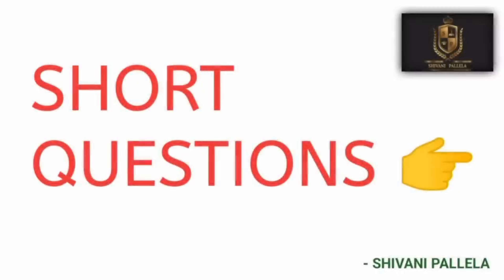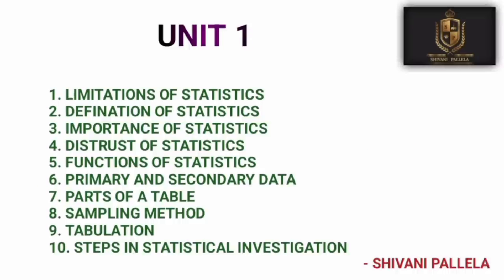Now we will discuss the short questions worth 20 marks total, unit wise. For unit one, there are about ten questions, but if you are perfect with the long questions, no need to learn all of them separately, as they are all covered there. The most important and expected questions are 'Distrust of Statistics' and 'Limitations of Statistics' — every year one of these two questions can be expected.